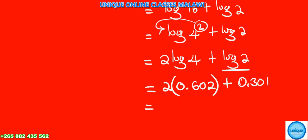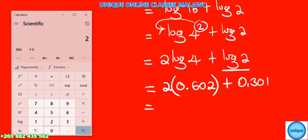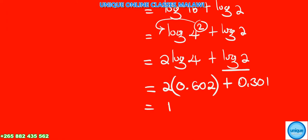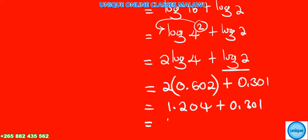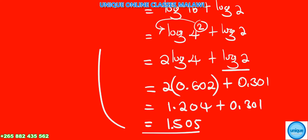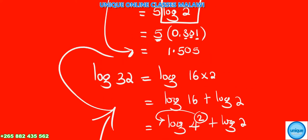We compute 2 times 0.602, which gives 1.204. Then adding 0.301, the answer is 1.505. So log of 32 equals 1.505.